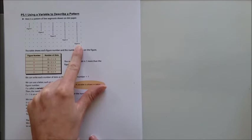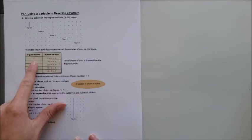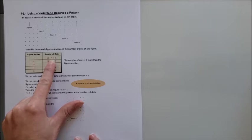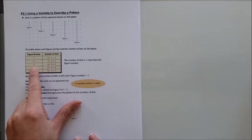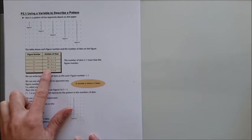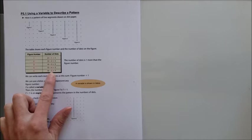So the table shows each figure number and the number of dots that are in each figure. So in figure one there is two or my input number of one, one plus one. In figure two there are three or two plus one, in figure three there are four or three plus one, in figure four there are five or four plus one, and in figure five there are six or five plus one.